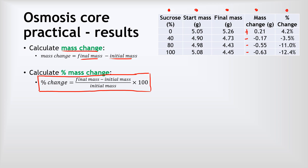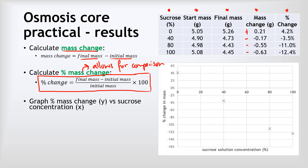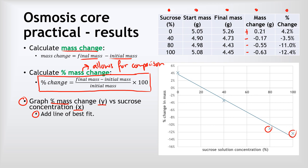We calculate percentage change because it allows for a fair comparison. It's very difficult to cut potato chips with the exact same starting mass, meaning the actual final mass change will be different for each one. By doing a percentage mass change, that lets us make comparisons even though the chips didn't start at the exact same starting mass. We then graphed our results — percentage mass on the y-axis versus sucrose concentration on the x-axis — and added a line of best fit, which is a straight line with a negative slope. The results are pretty decent — not all perfectly on the line, but all pretty close to it, which tells us we've got quite reliable results.